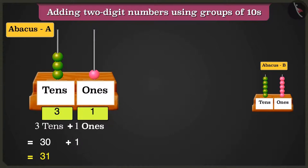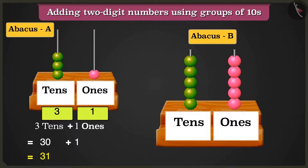Hey, perfect answer, Greeny. Look, here in abacus B, the tens box has 1, 2, 3, 4, and 5 beads.